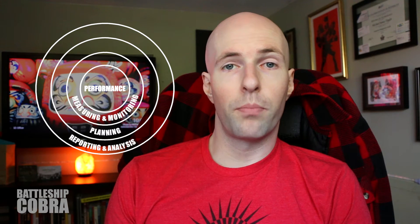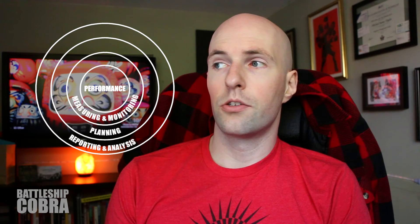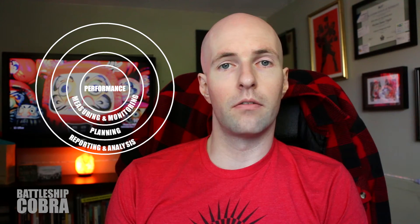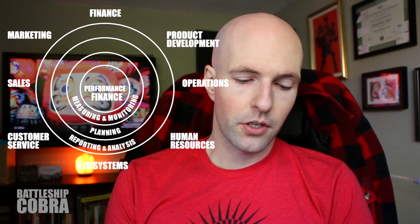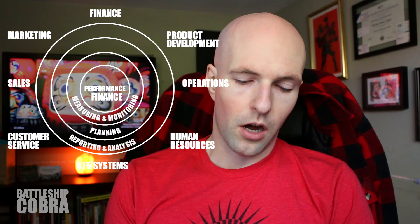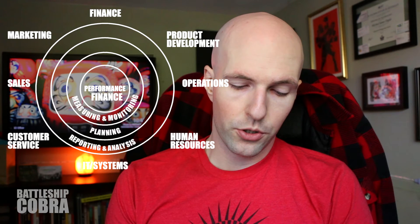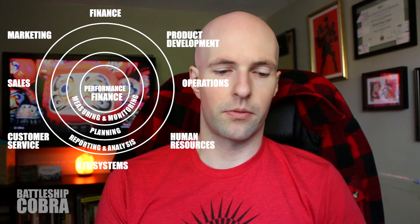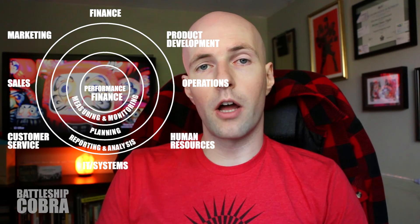Then you have 'Reporting and Analysis' — why did it happen. Those are the central rings of the Decision Speed Framework. It then breaks down into the main decision areas: Finance, Sales, Marketing, Product Development, Operations, Customer Service, IT and Systems, and Human Resources.